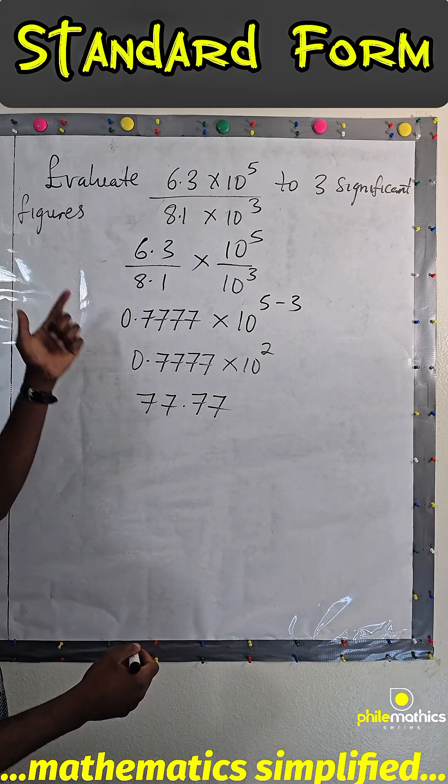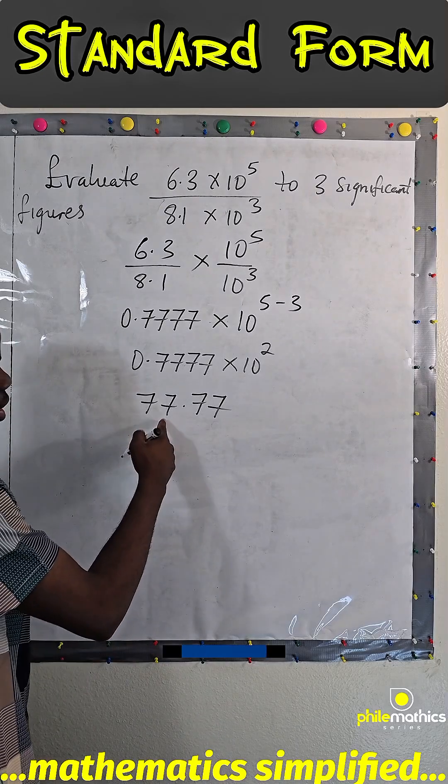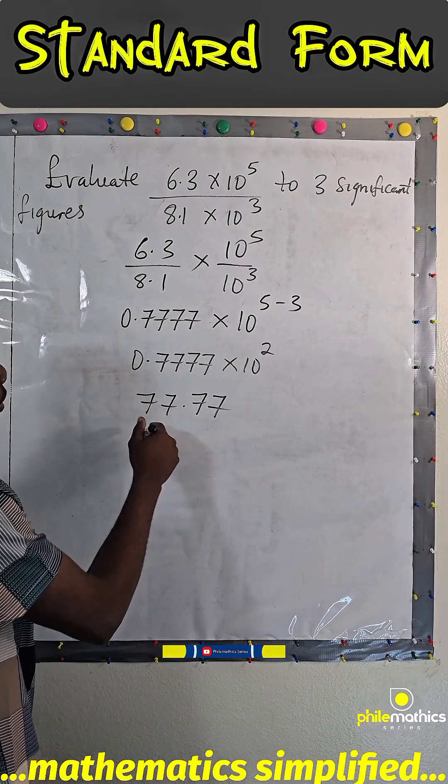And we are asked to do it to 3 significant figures. 3 significant figures simply means the first 3 non-zero digits: 1, 2, 3.